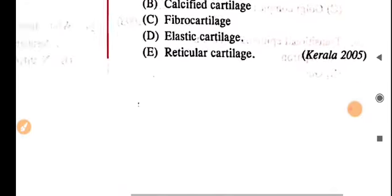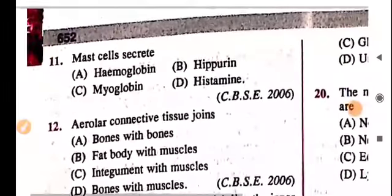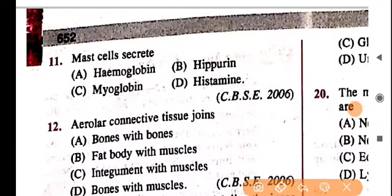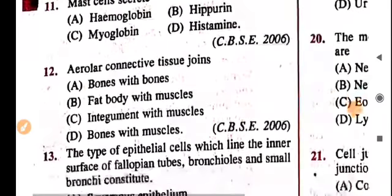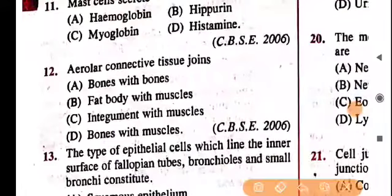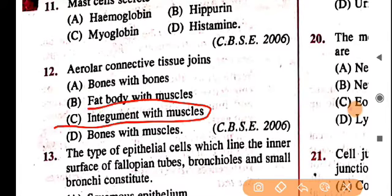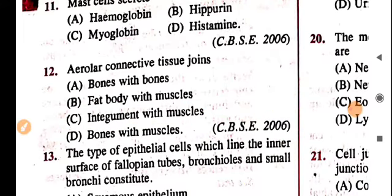Intervertebral discs are made of fibrocartilage. Next, question 11: mast cells secrete histamine, as mentioned above. Areolar connective tissue joins the integument with muscles — note this down as it was asked in CBSE 2006 and NEET examination.